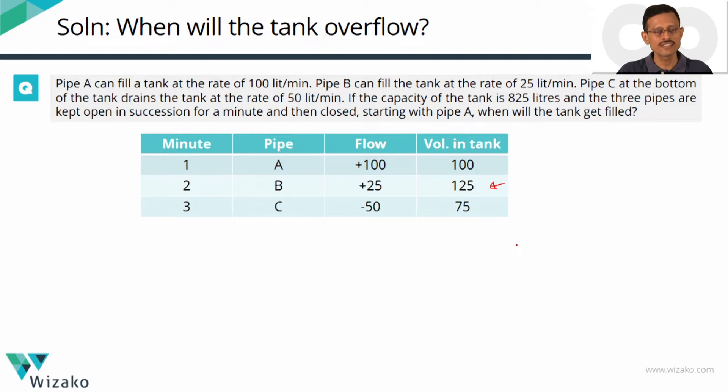The third minute pipe B is shut, it's only pipe C that's kept open. Pipe C is a drain pipe, it drains 50 liters each minute so we had 125 to start at the beginning of minute three, at the end of minute three they'll be down to 75 liters. So at the end of a cycle which comprises three minutes, one minute of A, one minute of B and then one minute of C will be left with 75 liters of water in the tank.